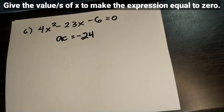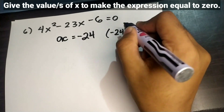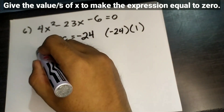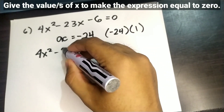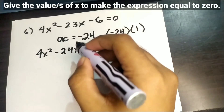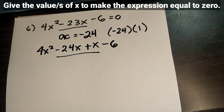In the AC method, we multiply the numerical values of the first term and the last term: 4 times negative 6 equals negative 24. Next, we find factors of negative 24 that add up to negative 23. Those factors are negative 24 and 1. We use these to split negative 23x, so the new expression becomes 4x squared minus 24x plus x minus 6.